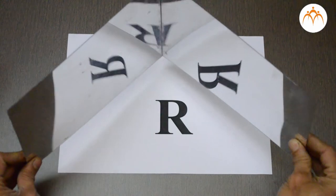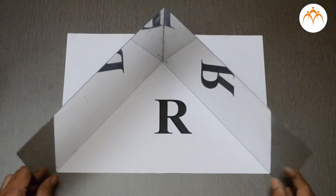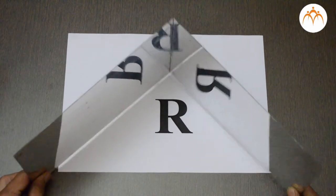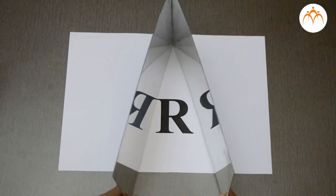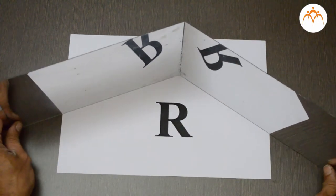Two mirrors are connected together with tape and placed on the table. We will place letter R in between the mirrors. Letter R is not symmetric in horizontal or vertical direction. This will help in knowing the image orientation as well.